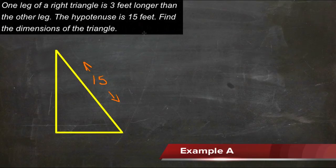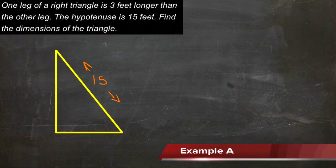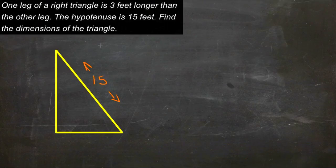In this lesson we're going to tackle a few real-world, more practical reasons to be able to factor trinomials and binomials and other polynomials. Our first example says that one leg of a right triangle is three feet longer than the other leg, and the hypotenuse of the triangle is 15 feet long. We need to find the dimensions of the triangle.